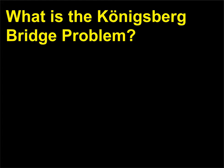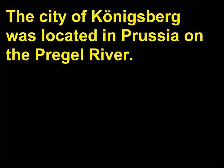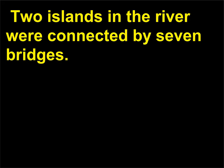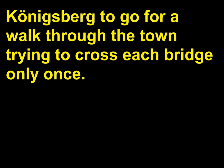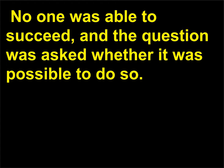What is the Königsberg Bridge problem? The city of Königsberg was located in Prussia on the Prygel River. Two islands in the river were connected by seven bridges. By the 18th century, it had become a tradition for the citizens of Königsberg to go for a walk through the town trying to cross each bridge only once. No one was able to succeed, and the question was asked whether it was possible to do so.